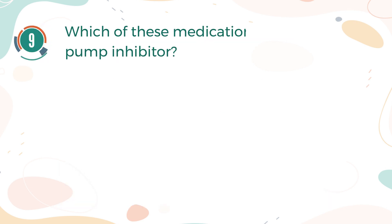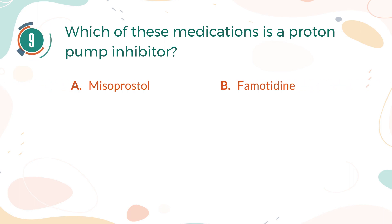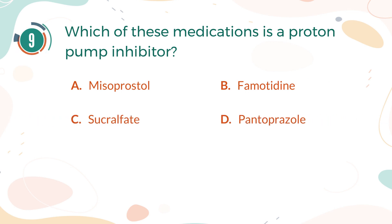Number 9. Which of these medications is a proton pump inhibitor? A. Misoprostol. B. Famotidine. C. Sucralfate. D. Pantoprazole.